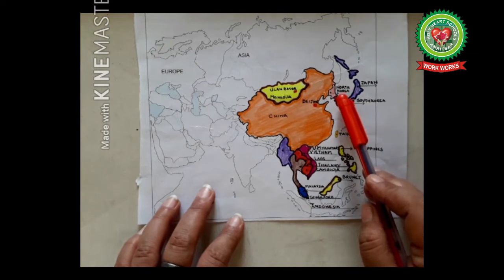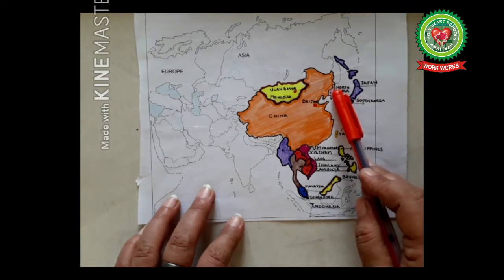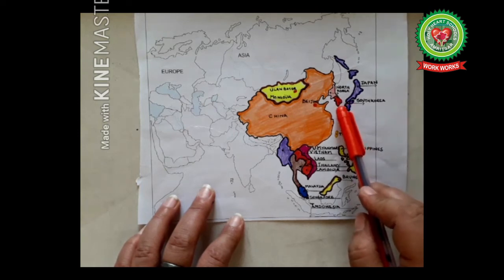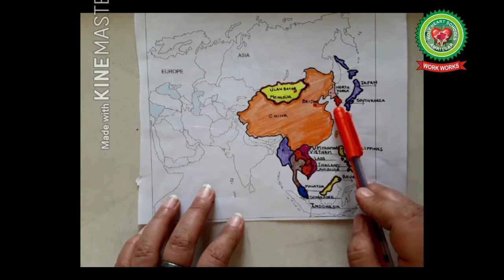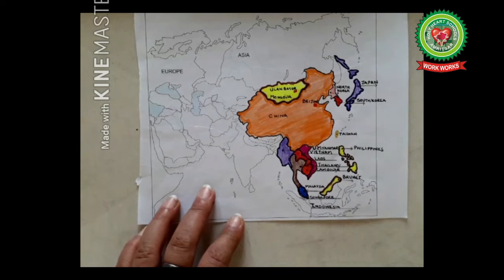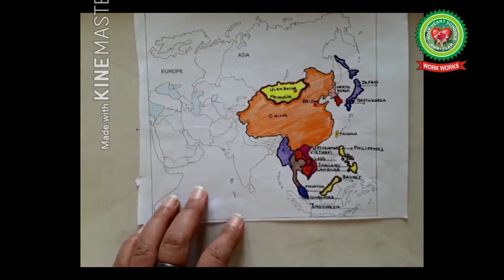Next is North Korea, and the capital of North Korea is Pyongyang. According to the constitution of North Korea, the country is a democratic republic. North Korea is famous for its mass games, which are the cumulative celebration of the state leaders' birthdays. Next is South Korea — its capital is Seoul. South Korea is an East Asian nation on the southern half of the Korean Peninsula, sharing one of the world's most heavily militarized borders with North Korea.